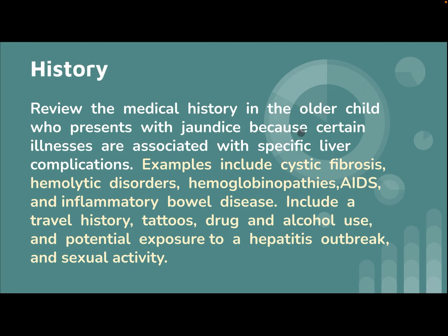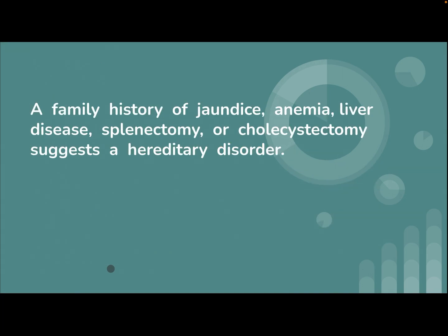Review the medical history in the older child who presents with jaundice, because certain illnesses are associated with specific liver complications. Examples include cystic fibrosis, hemolytic disorders, hemoglobinopathies, AIDS, and inflammatory bowel disease. Include a travel history, tattoos, drug and alcohol use, potential exposure to hepatitis outbreaks, and sexual activity. A family history of jaundice, anemia, liver disease, splenectomy, or cholecystectomy suggests a hereditary disorder.